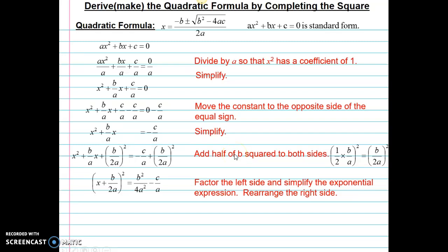Next I'm going to factor the left hand side and simplify the exponential expression. b over 2a squared is just b squared over 4a squared. I also rearranged it so that I have the b squared minus 4ac in the front with a subtraction problem instead of negative c over a. Next I need to find a common denominator so I can add those two fractions together.